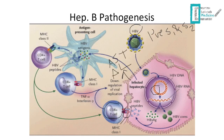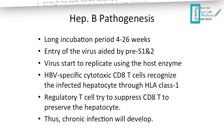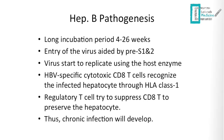The immune system recognizes the damage to the hepatocytes and sends CD4 T cells — the regulatory ones — which suppress the cytotoxic T cells in order to preserve the hepatocytes. When this occurs, the patient develops a chronic infection.